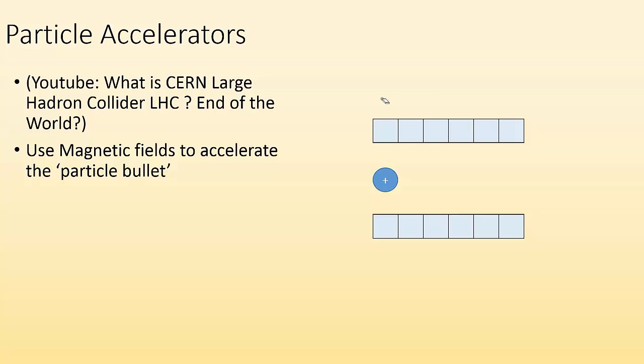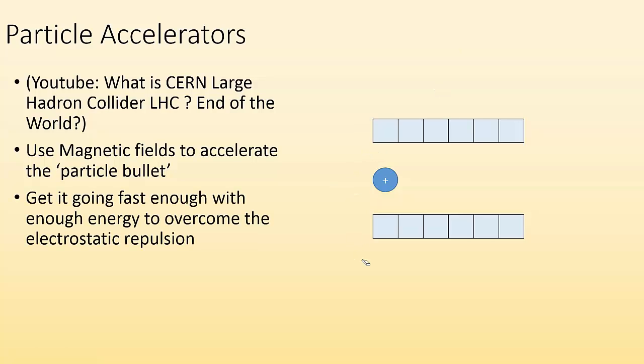So they use magnetic fields to accelerate a particle bullet. So we got a particle bullet right here. It's a charged particle. All right. So how are we going to accelerate it? Well, we're going to have to use magnetic fields. All right. And we're going to get it going fast enough to overcome the electrostatic repulsion. So how are we going to do that?